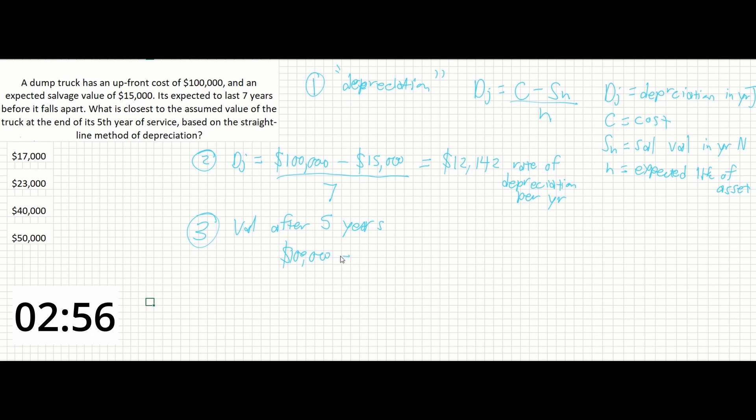We can think of this to match our units up as five years times twelve thousand one hundred and forty two, so that the units cancel and we're left with a dollar to dollar comparison. The end result here would be $39,290, which we can see is very close to our answer of c.